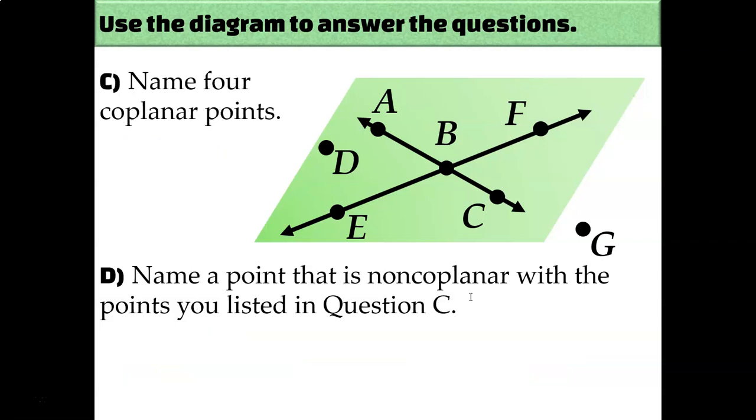Now let's talk about coplanar. Remember from the previous lesson that coplanar means that they are all on the same plane. And there's actually a lot of points all on the same plane. Basically every single point except for G is all on the same plane, but I'm going to pick A, B, C, and D for my four points. Just the first four letters of the alphabet.